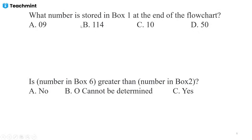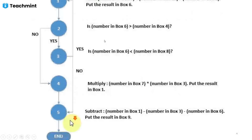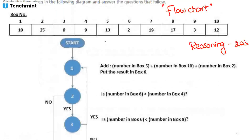At the end of the entire scenario, they ask what is in box 1, what is in box 2, and so on. Let us see the first step: the number in box 5, which is 13, plus the number in box 10, which is 12, plus the number in box 2, which is 25 — adding all this we get 50. That result should be replaced in box 6.